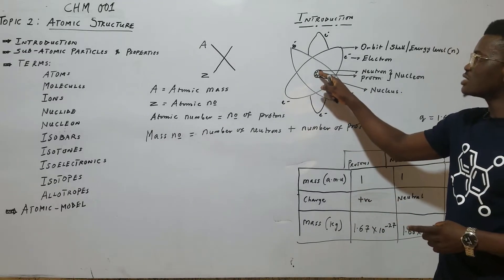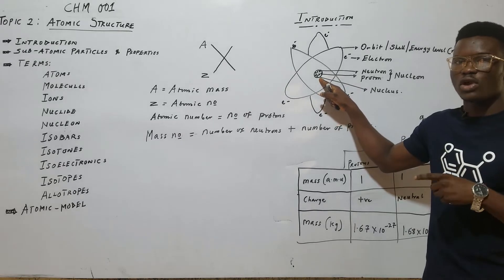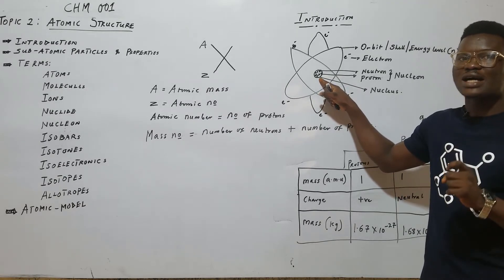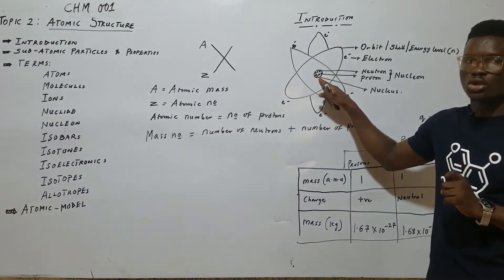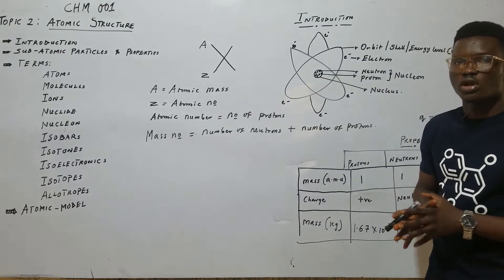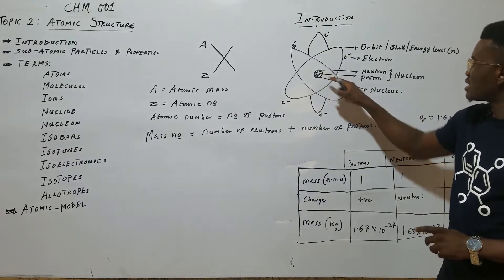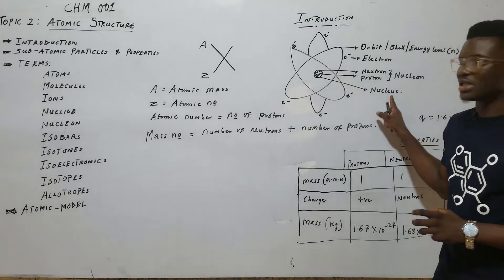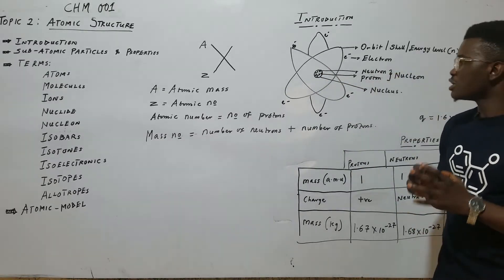Inside this atom, we have the nucleus. The nucleus has the proton and the neutron. The protons and the neutrons, they are collectively called the nucleus of the atom. So this inside is called the nucleus that houses the protons and the neutrons.